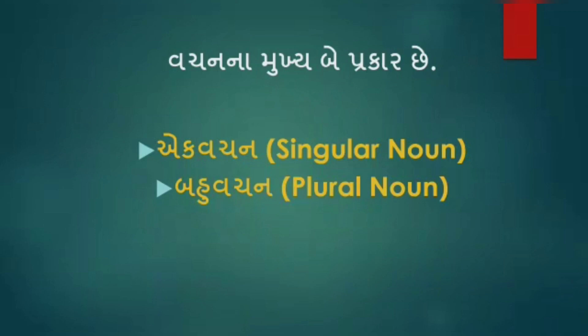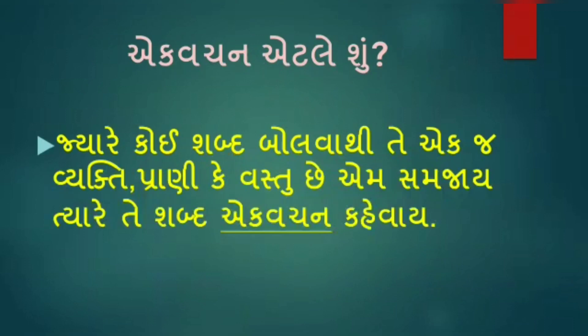પહેલો પ્રકાર છે એક વચન. તો હવે એક વચન એટલે શું? એક વચન કેવાય — જ્યારે કોઈ શબ્દ બોલવાથી તે એક વ્યક્તિ, પ્રાણી કે વસ્તુનો નિર્દેશ કરે, ત્યારે તે શબ્દને એક વચન કહેવાય.